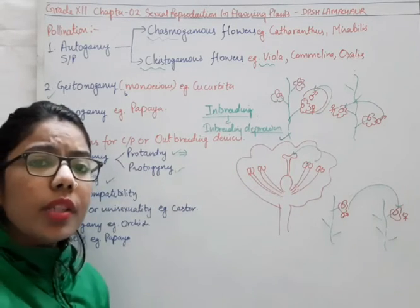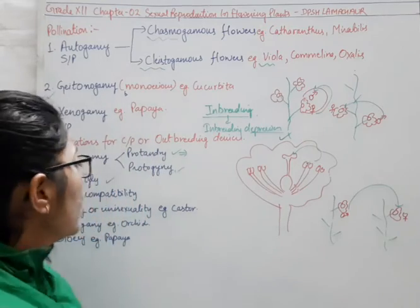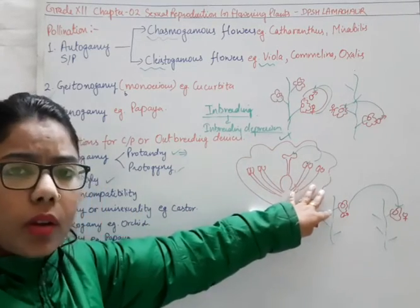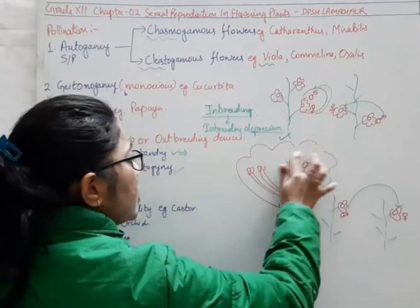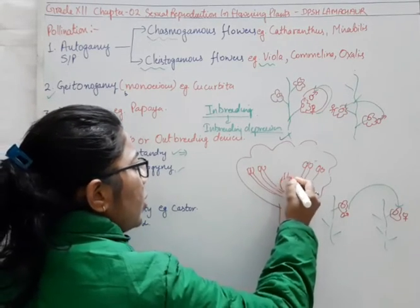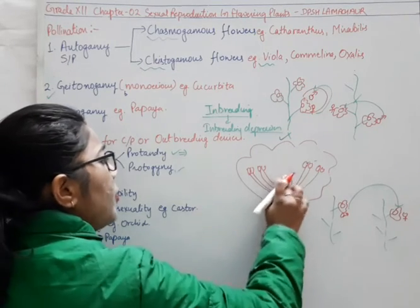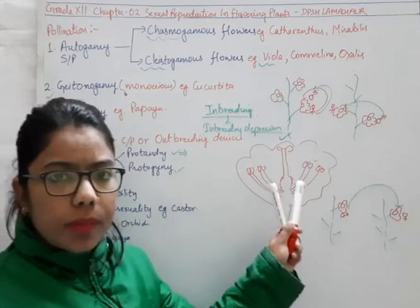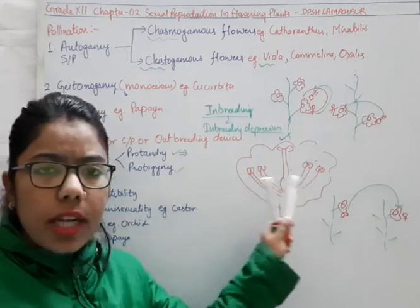The second outbreeding device is heterostyly. Hetero means different, styly means style. If the style position is not compatible with the stigma or with the pollen grain — for self-pollination, the pollen will not be able to reach the stigma if the stigma is positioned very high. In that condition, the pollen grains will not reach towards the stigma, preventing self-pollination because the style condition is different.